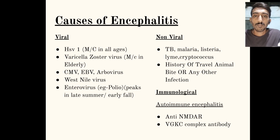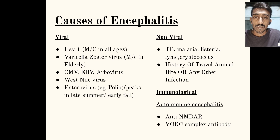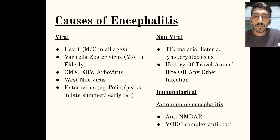For non-viral causes, major encephalitis can be caused by TB, malaria, Listeria, Lyme disease, and Cryptococcus. We should look for history of travel, animal bite, or any other infection. If there is a secondary infection, it may cause an immunological response leading to autoimmune encephalitis, which directly affects the NMDAR or VGKC complex antibody, resulting in encephalitis.